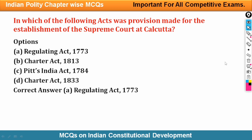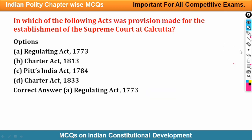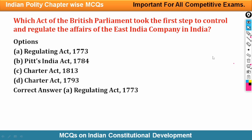Next question: In which of the following acts was provision made for the establishment of the Supreme Court of Kolkata? The Supreme Court of Kolkata was established after the Regulating Act 1773. Similarly, which act of the British Parliament took the first step to control and regulate the affairs of the East India Company? The answer is also Regulating Act 1773.